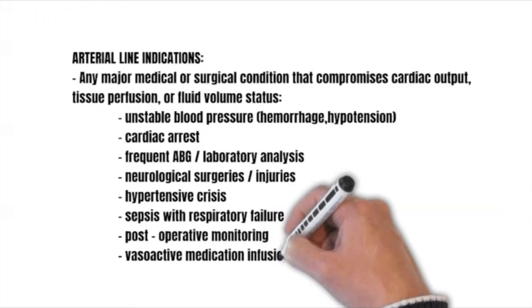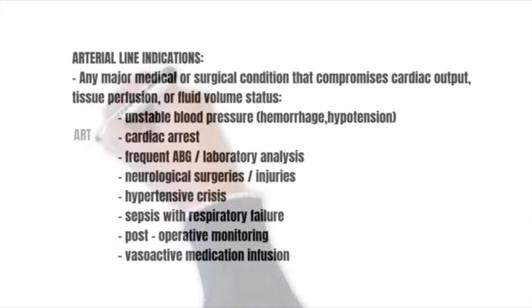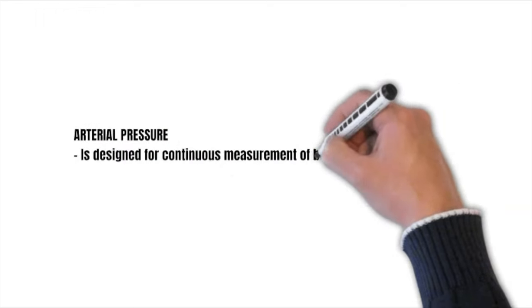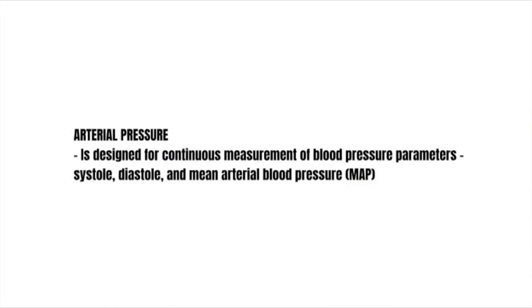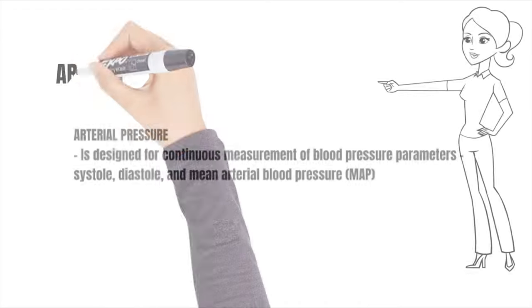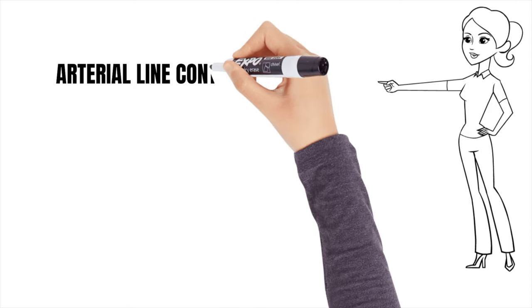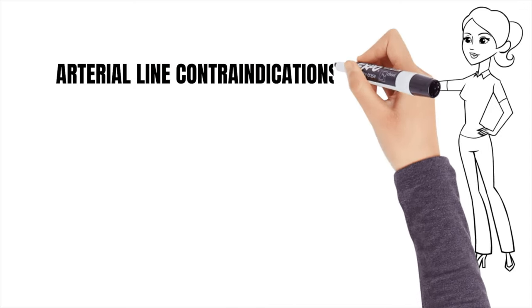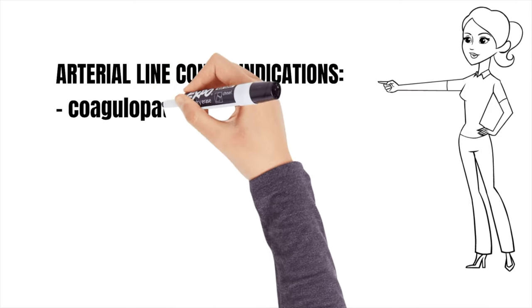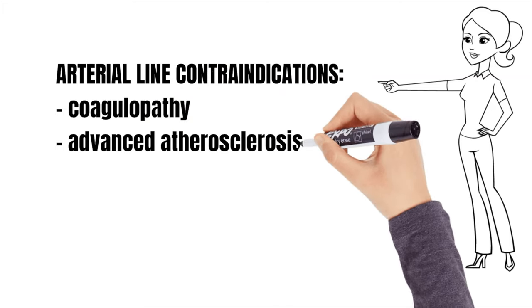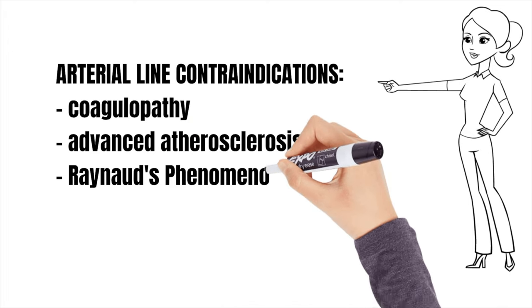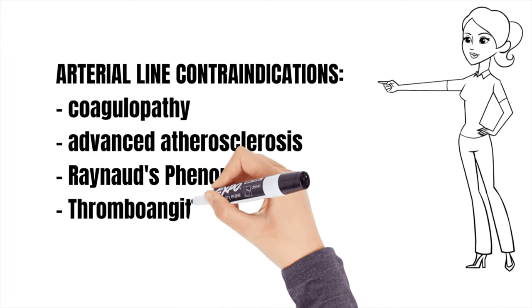Arterial pressure is designed for continuous measurement of blood pressure parameters like the systole, diastole, and mean arterial blood pressure. Arterial line contraindications: coagulopathy, advanced atherosclerosis, Raynaud's phenomenon, and thromboangitis obliterans.